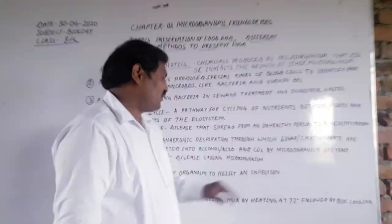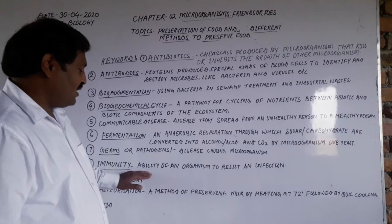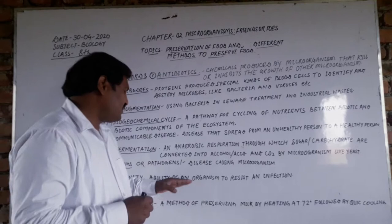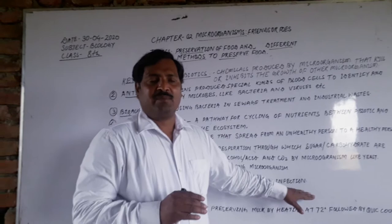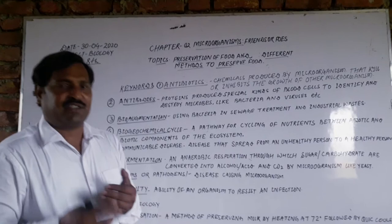The next topic is immunity. Immunity means the ability of an organism — like us or other organisms — to resist an infection. When any pathogen enters our body and starts increasing in number, trying to cause disease, our body automatically and spontaneously resists that infection. This ability to fight against disease is called immunity.